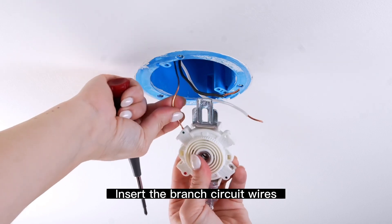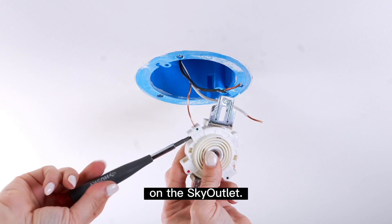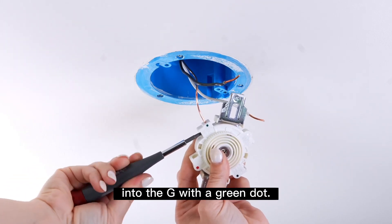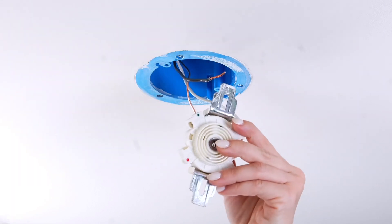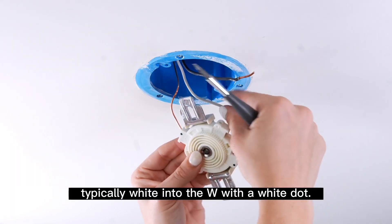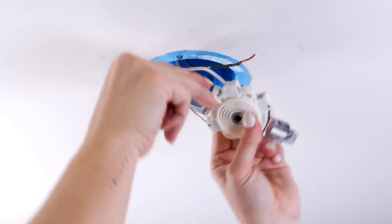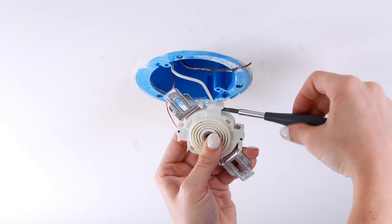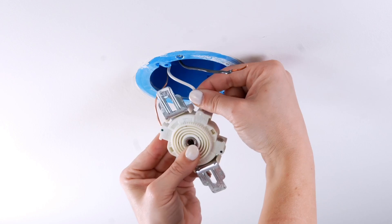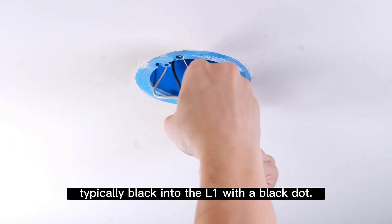Insert the branch circuit wires into the corresponding color-coded terminals on the sky outlet. Insert ground, typically copper color, into the G with a green dot. Insert neutral, typically white, into the W with a white dot. Insert live, typically black, into the L1 with a black dot.